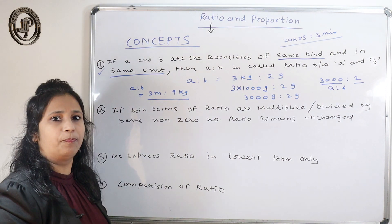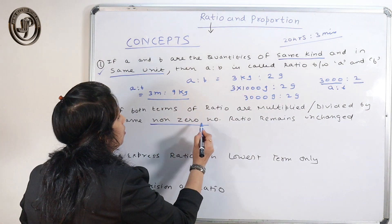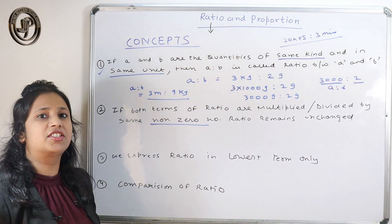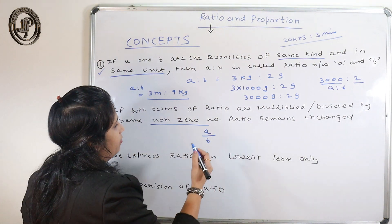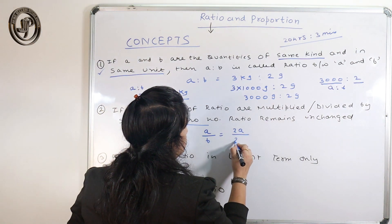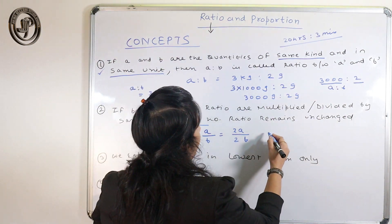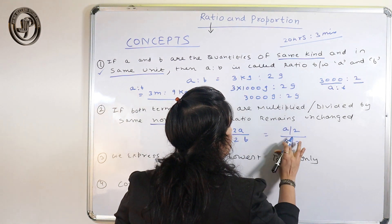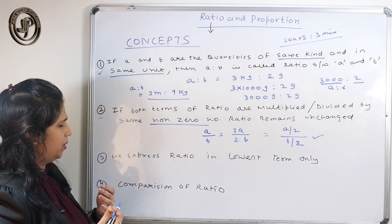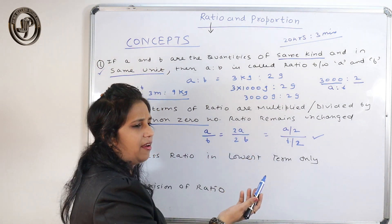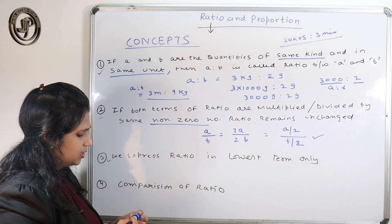The second concept: if both terms of the ratio are multiplied or divided by the same non-zero number, the ratio remains unchanged. So if the ratio is a is to b and you multiply both terms by 2, you get 2a to 2b, but the ratio is unchanged. Similarly, dividing both terms by the same non-zero number keeps the ratio the same.